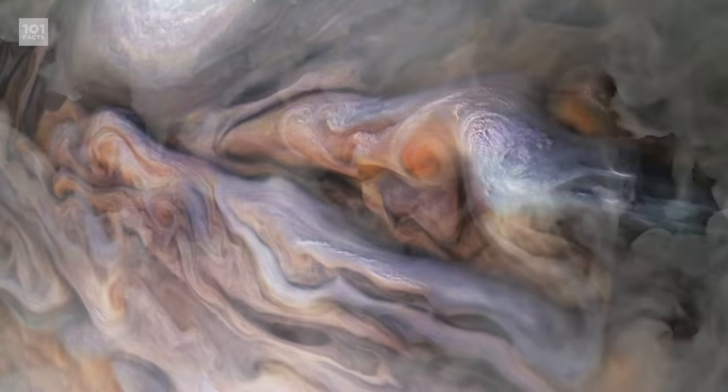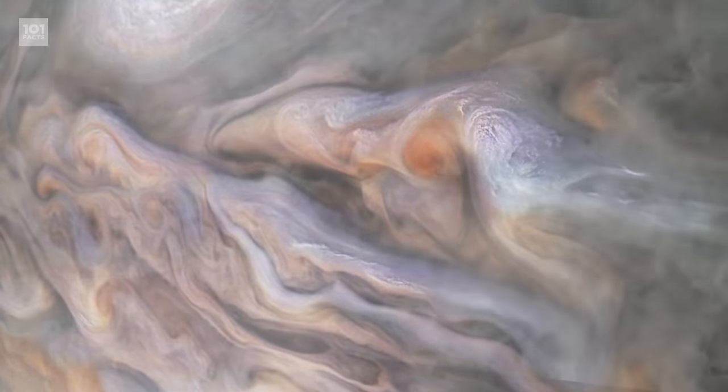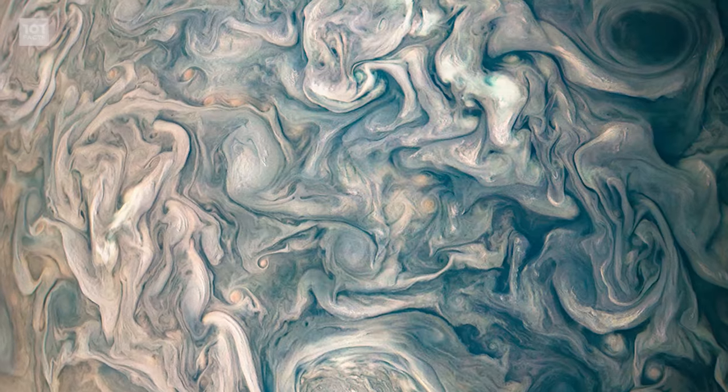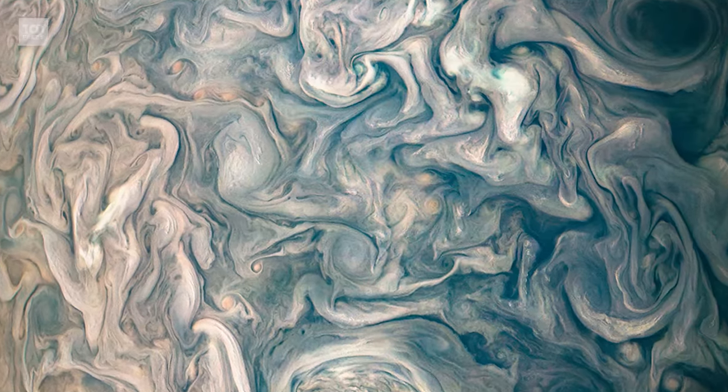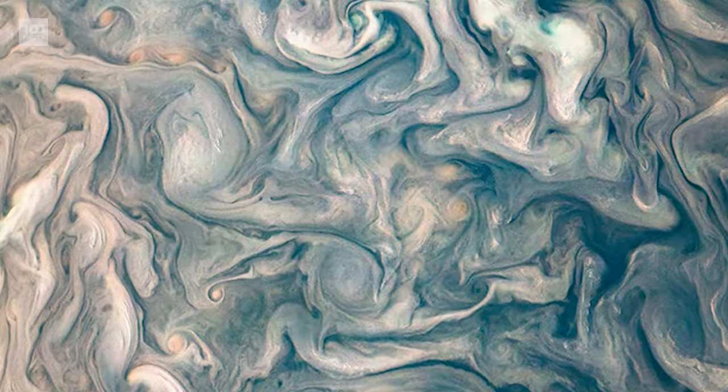So how do we define what the surface of Jupiter is if there's not a literal surface? Well, the science-y folk define the surface as the point in the gas layers where the atmospheric pressure is the same as that on Earth. When reaching that point on or in Jupiter, the gravitational pull is almost two and a half times stronger than Earth.